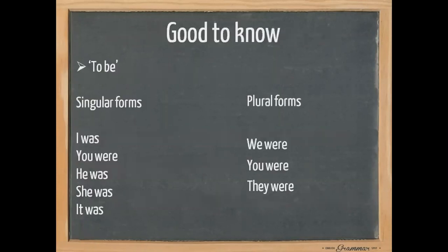Now before we get started, it's good to know how to conjugate the verb 'to be' in its past tense. Singular forms: I was, you were, he was, she was, it was. Plural forms: we were, you were, they were.